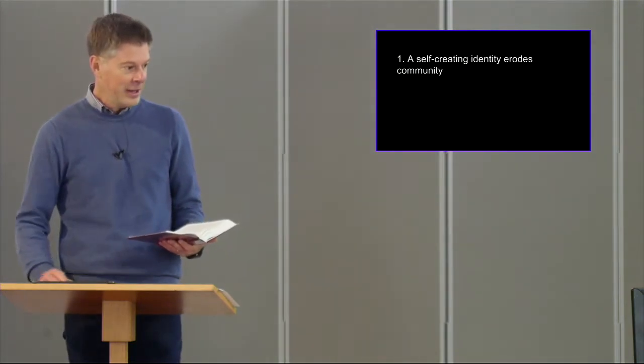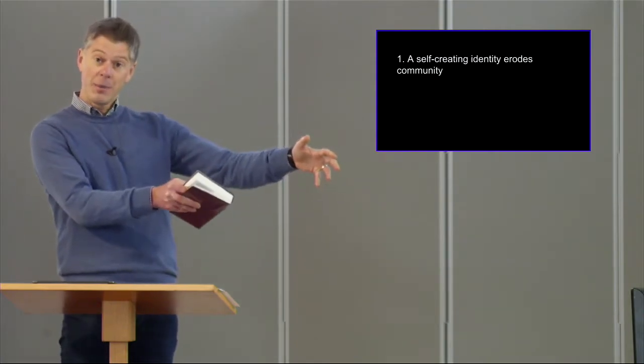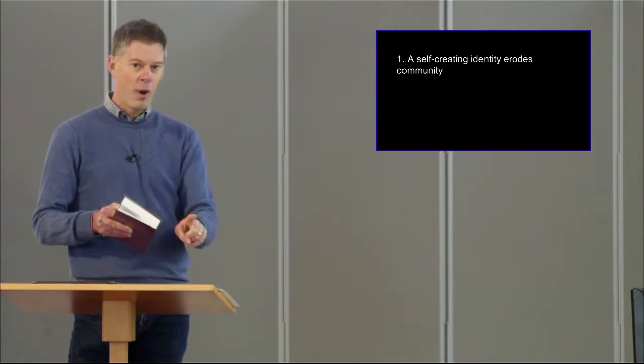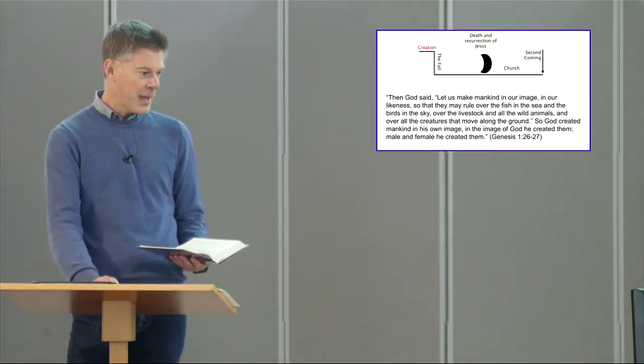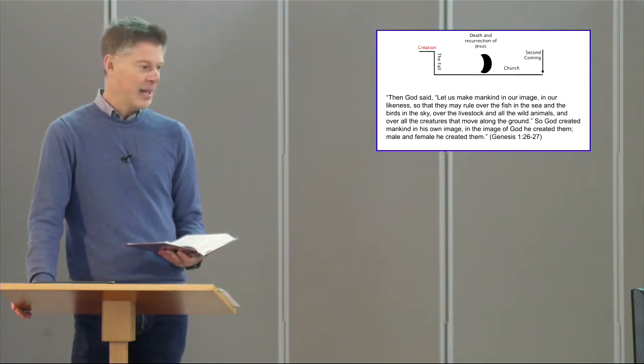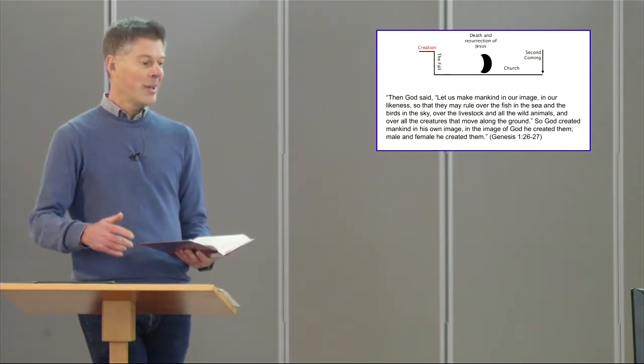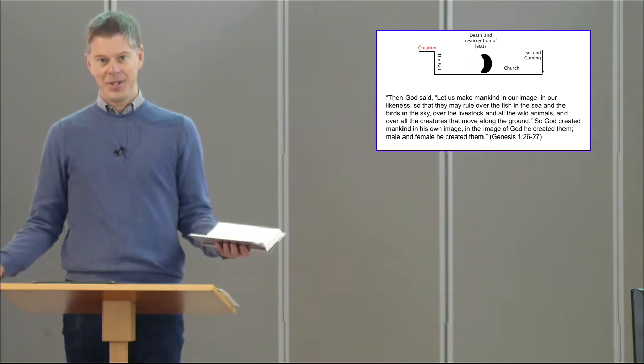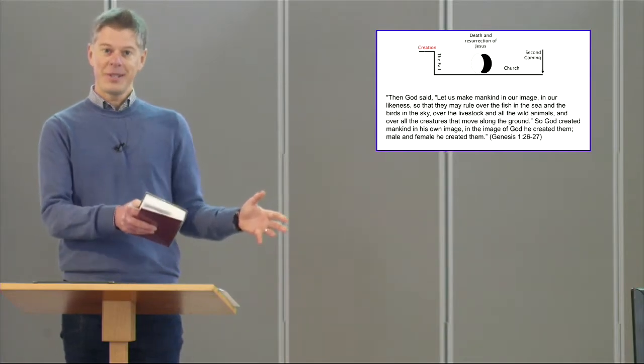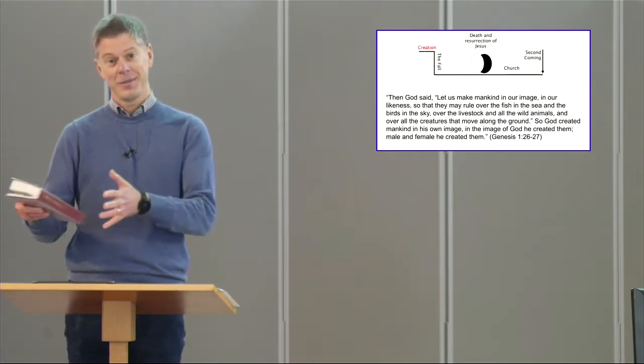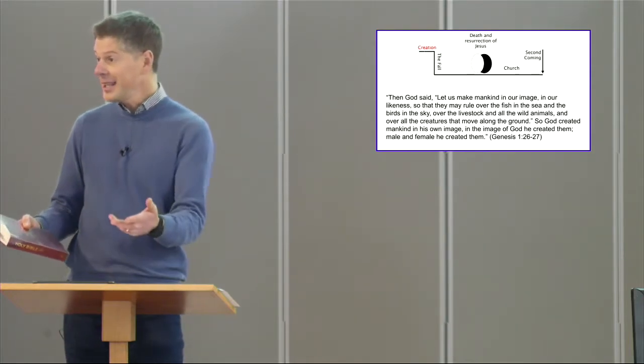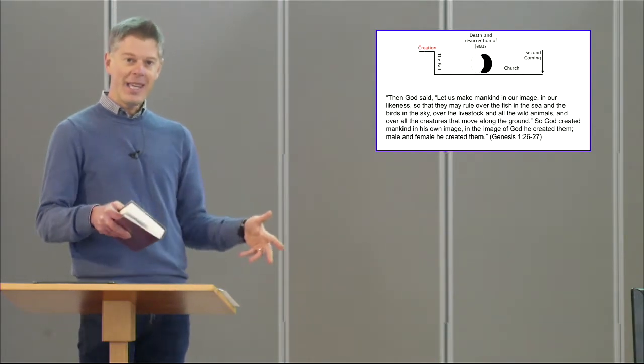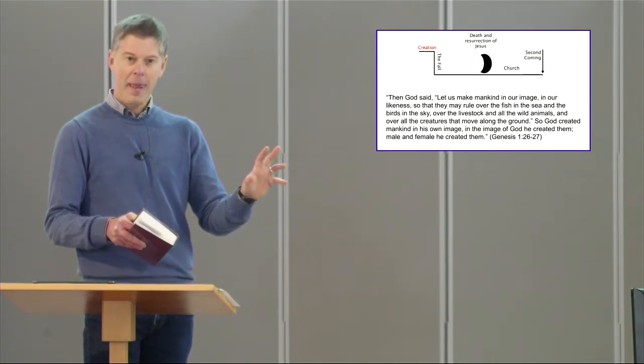A couple of points. Point one: a self-creating identity. So all the things that we thought about last week, a self-creating identity, an identity I build for myself apart from Christ, always always erodes community. Now the starting point for everything is the verse that you'll see there on the screen. It's a verse that highlights the plurality of God. Not 'let me make humankind in my image,' but 'let us make humankind in our image.' And the big implication of that is that we are not just creatures, we are persons. And the whole point of persons is that we are defined in terms of our relationships together. Can you see the point? We are hardwired to be known and to be loved, not made in the image of a solitary being, but made in the image of a God who is three persons in perfect relationship.